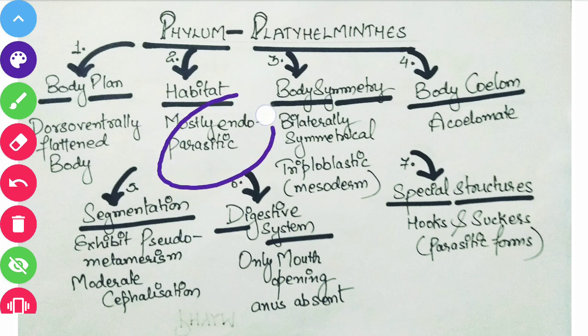Endoparasitic means they live inside the body of another living organism — maybe an animal, maybe a human being. Just because they are living inside the body, it is 'endo', and they are dependent on the other organism, living as a parasite. So the name given is endoparasite.